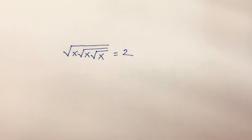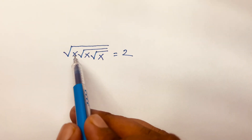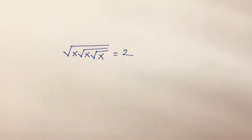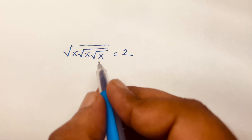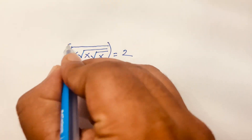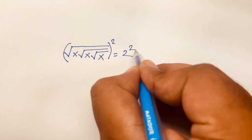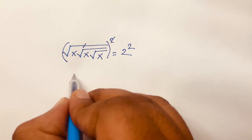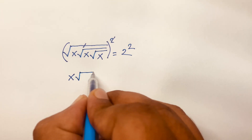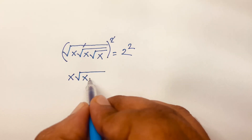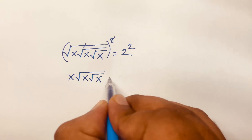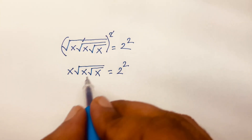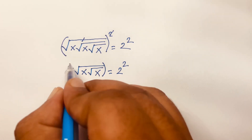How to solve this Math Olympiad question: square root of x times square root of x times square root of x is equal to 2. We'll find out the value of x. First, I square both sides. The square root and square cancel, so we find x times square root of x times square root of x is equal to 2 squared.